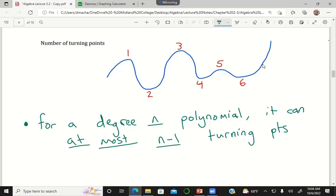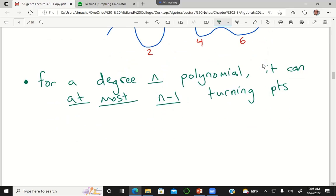So if I have a degree five polynomial, it can have at most four turning points. If I have a degree 2022 polynomial, how many turning points could it have? Two thousand twenty-one. Can't have more than that.